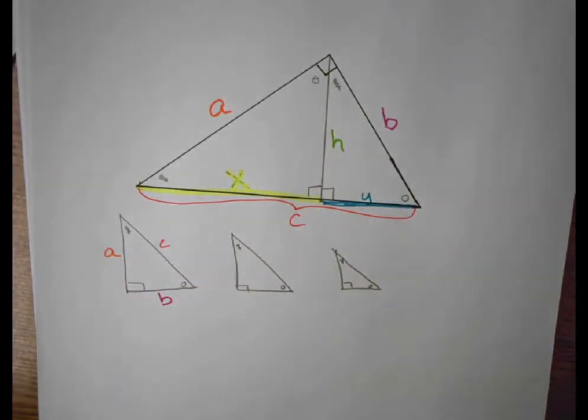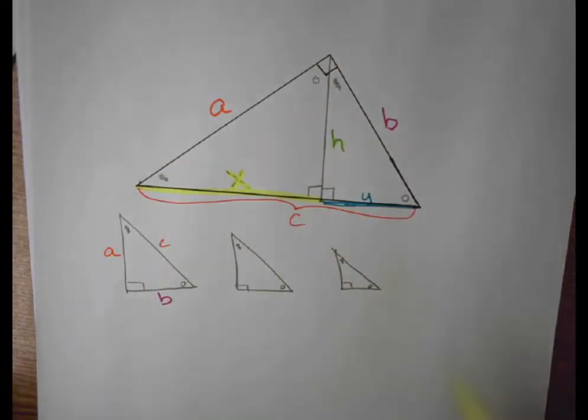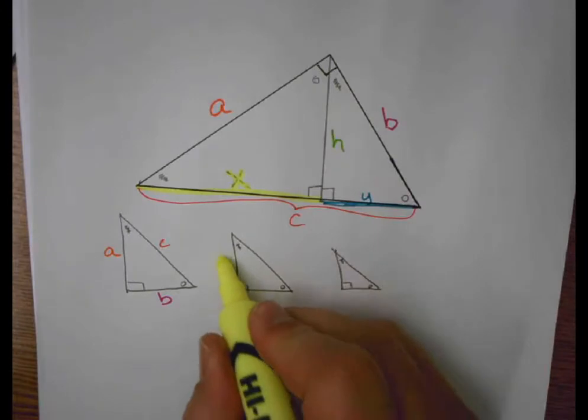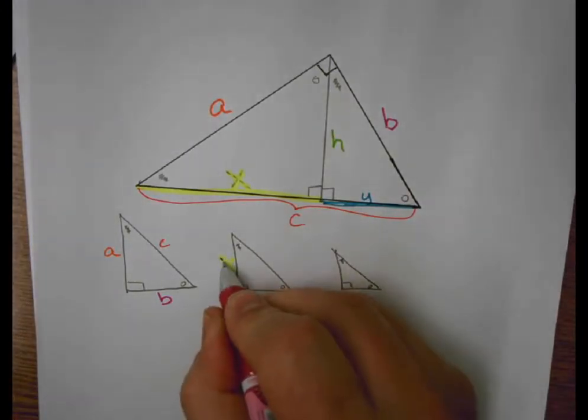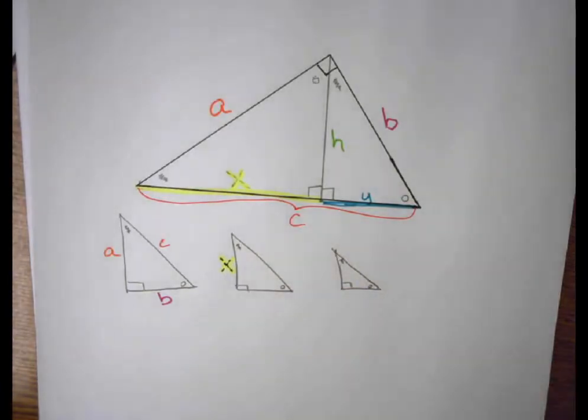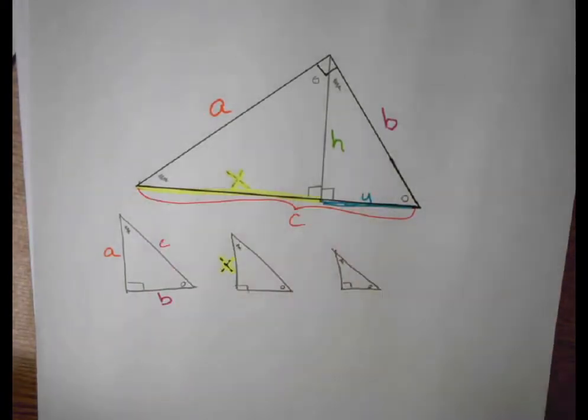Then I'm going to say my middle triangle, so this one here. I see that the side opposite circle is X. This side opposite squiggly is H.